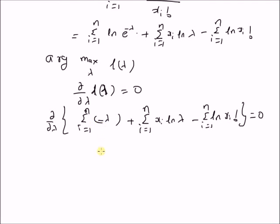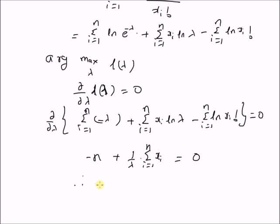The first term is minus n lambda, so its derivative is minus n. The second term's derivative of log lambda is 1 by lambda, giving summation i equal to 1 to n of x_i times 1 over lambda. The third term is independent of lambda, so its derivative is 0. Setting the result equal to 0 gives lambda hat equal to 1 by n times summation i equal to 1 to n of x_i, which is nothing but the sample mean.